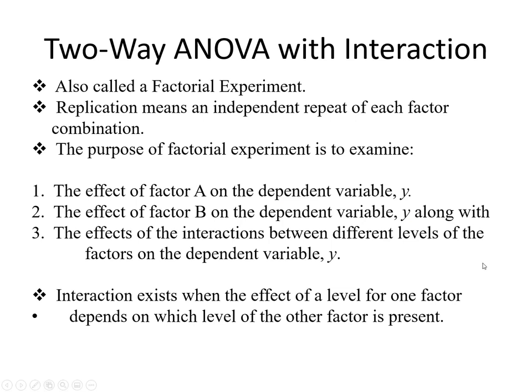Now in this lecture, we will also discuss the interaction between the two independent variables and their impact on the dependent variable. Two-way ANOVA is also called a factorial experiment because we repeat the experiment for each individual independent variable. Replication means an independent repeat of each factor combination — we check every combination.